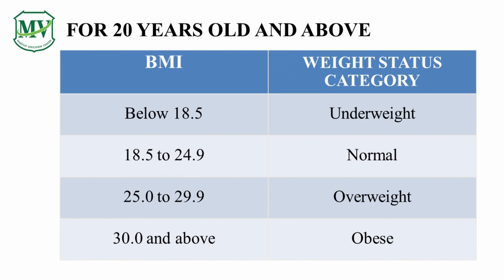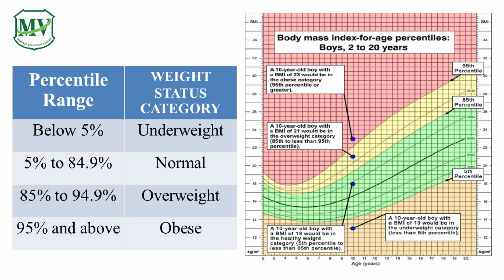For adults 20 years old and above, his or her BMI is interpreted using the standard weight status categories. For a child of 2 to 19 years of age, his or her BMI is interpreted based on age and gender, and plotted on the BMI-for-age growth chart. Please read and study the table and chart on the screen — the percentile range will vary according to age and gender.